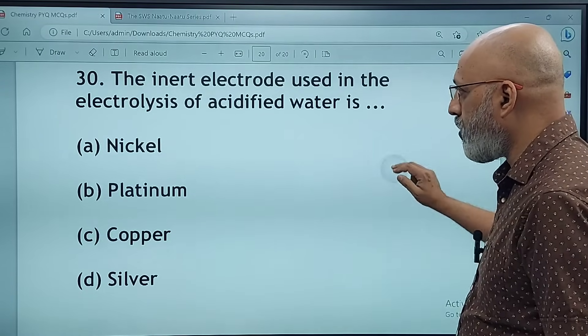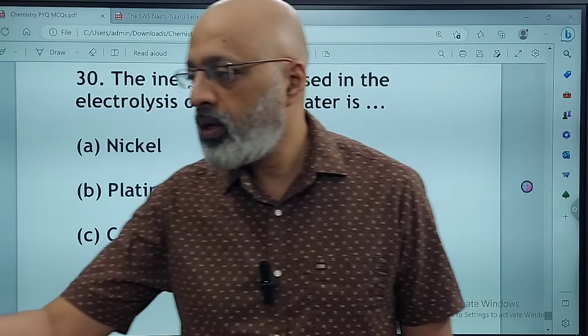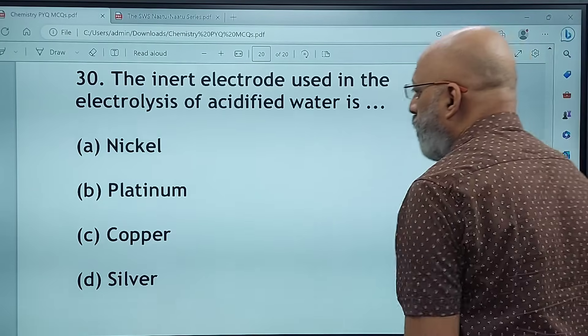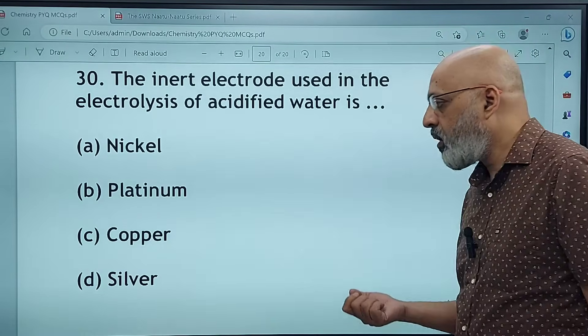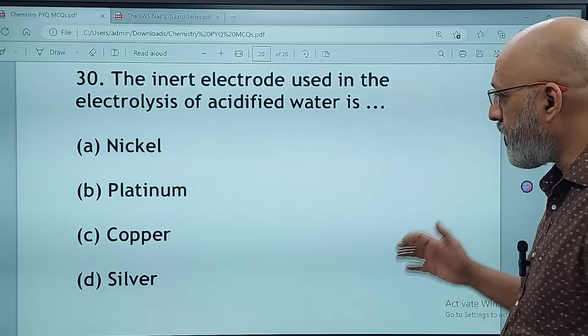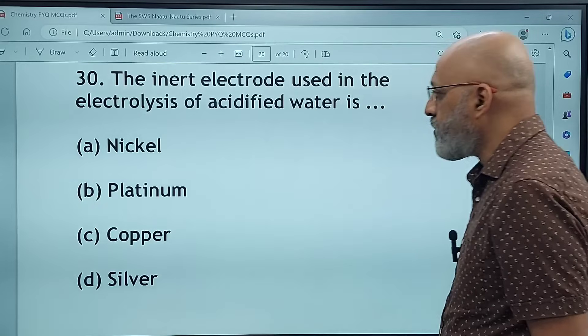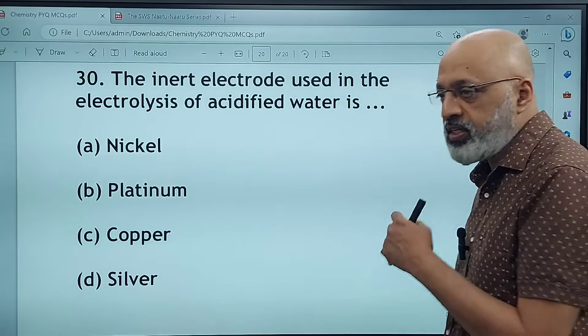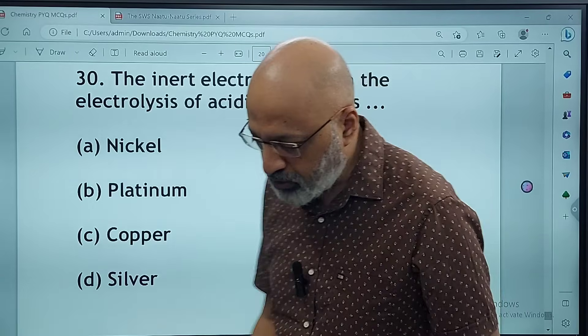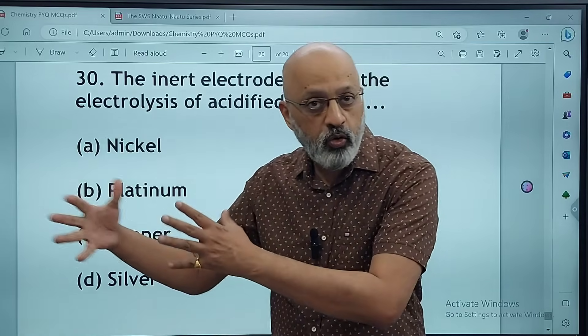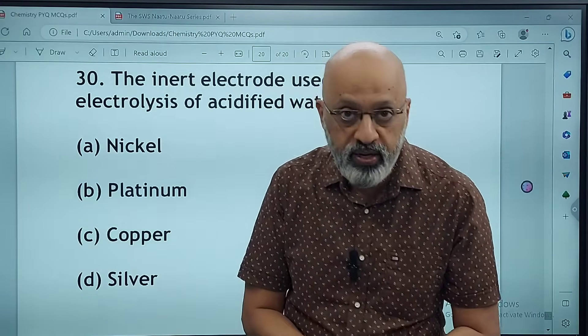The last question: The inert electrode used in the electrolysis of acidified water is nickel, platinum, copper, or silver. Platinum is the right answer. With this we come to the end of this particular list of MCQs taken from previous year question papers 2015 to 2020.